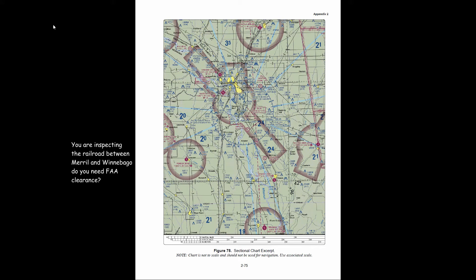You're inspecting the railroad between Merrill and Winnebago — do you need FAA clearance? We find the railroad at the bottom of the map and follow it up looking for both locations. We find Winnebago first — this is class E airspace starting at 700 feet above ground level. Since our drone can be no higher than 400 feet, we don't need clearance there because the floor starts 300 feet above what we're allowed. Continuing up the railroad, we hit class D airspace that starts at ground level — class D has the broken blue line — and up here is Merrill. So the answer is yes, we would need FAA clearance to fly through that class D airspace.